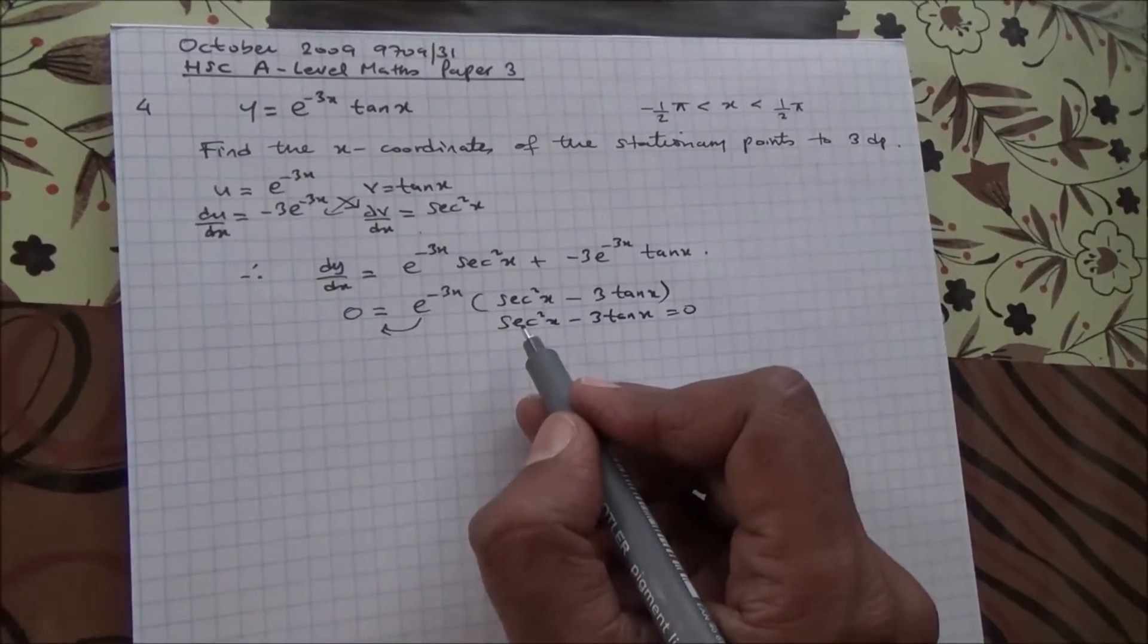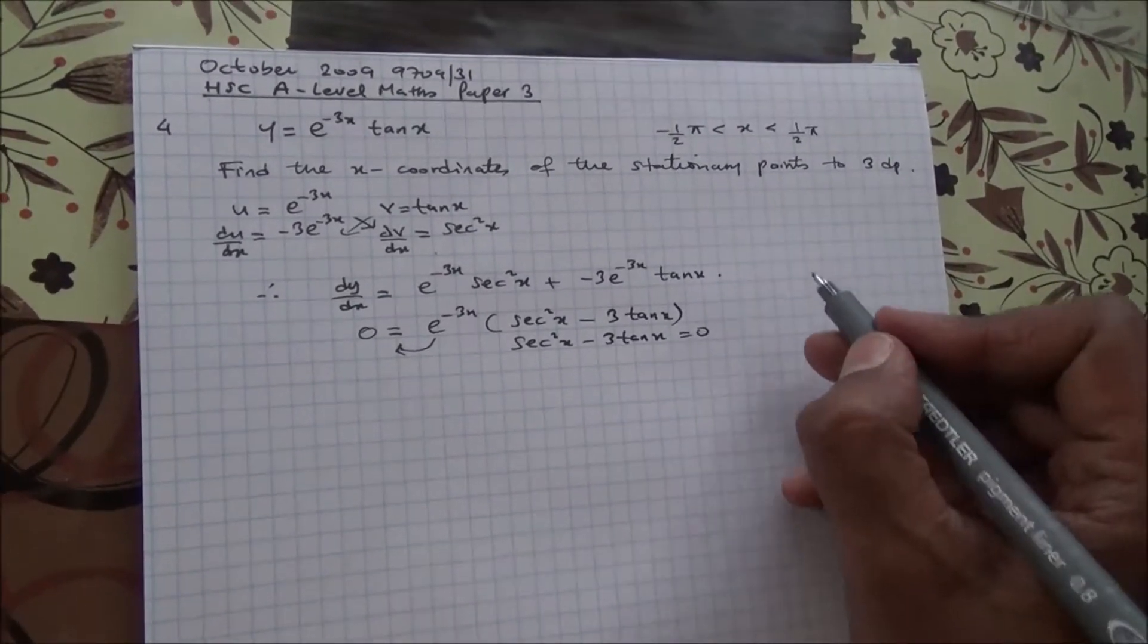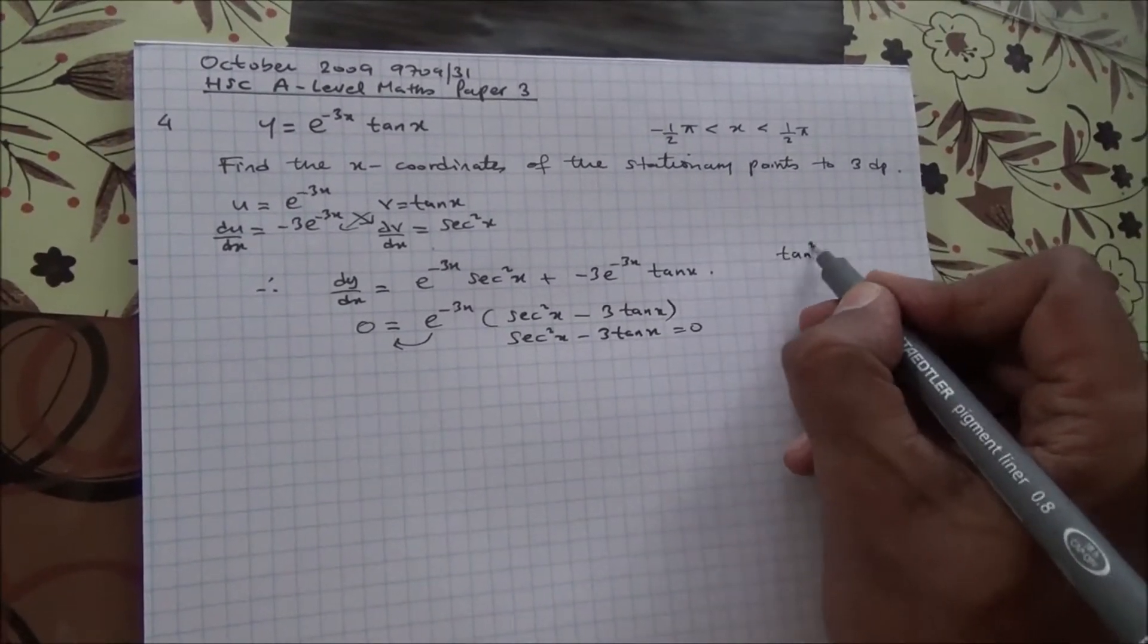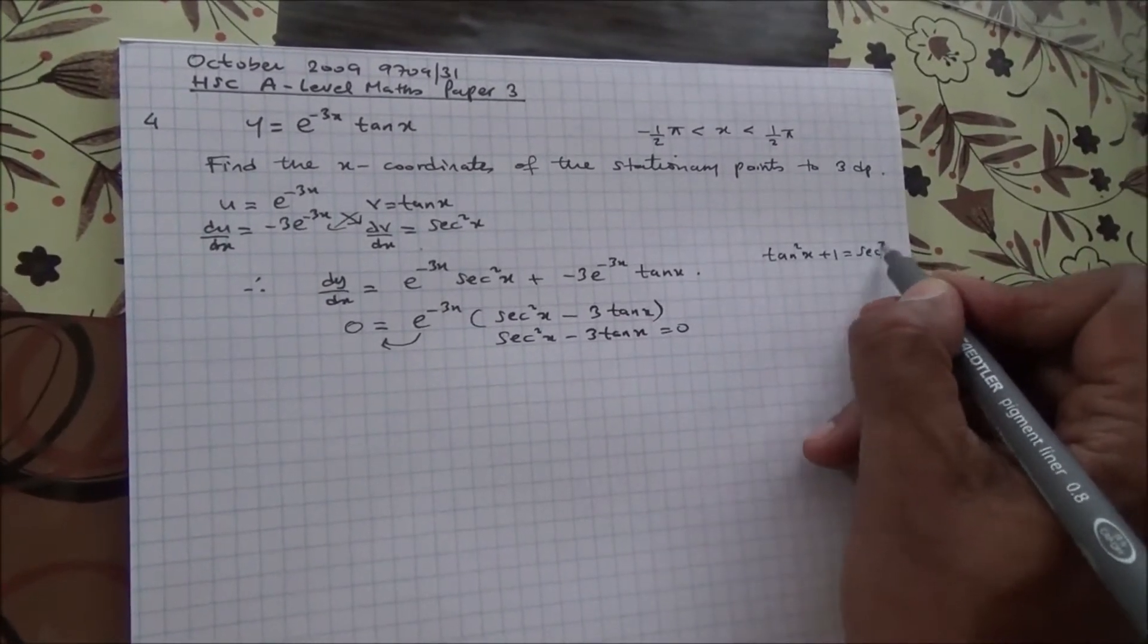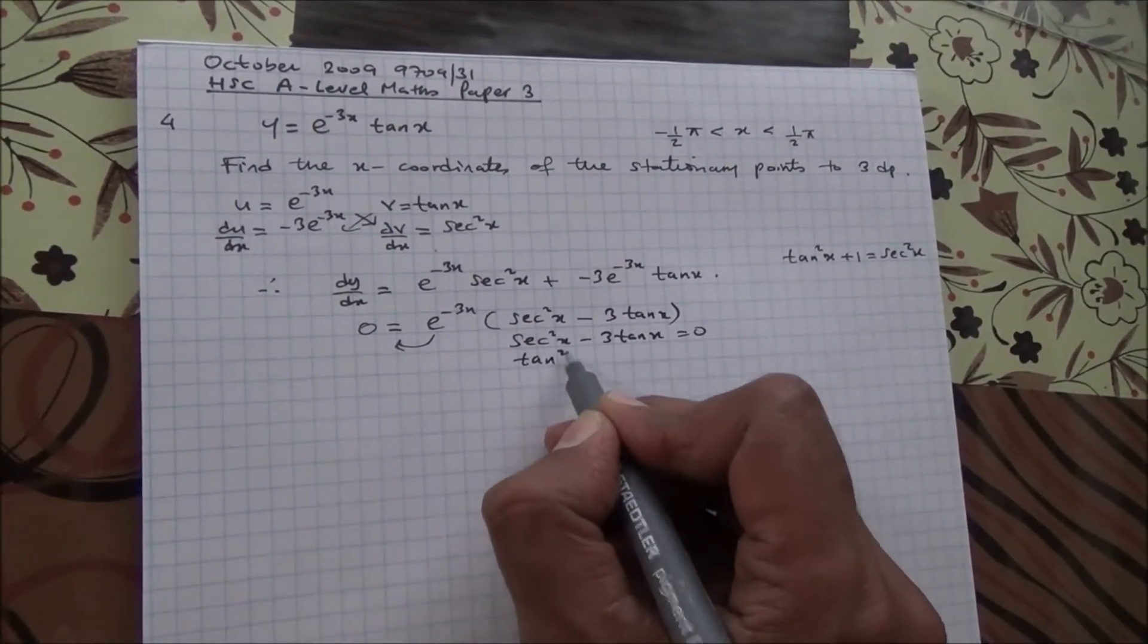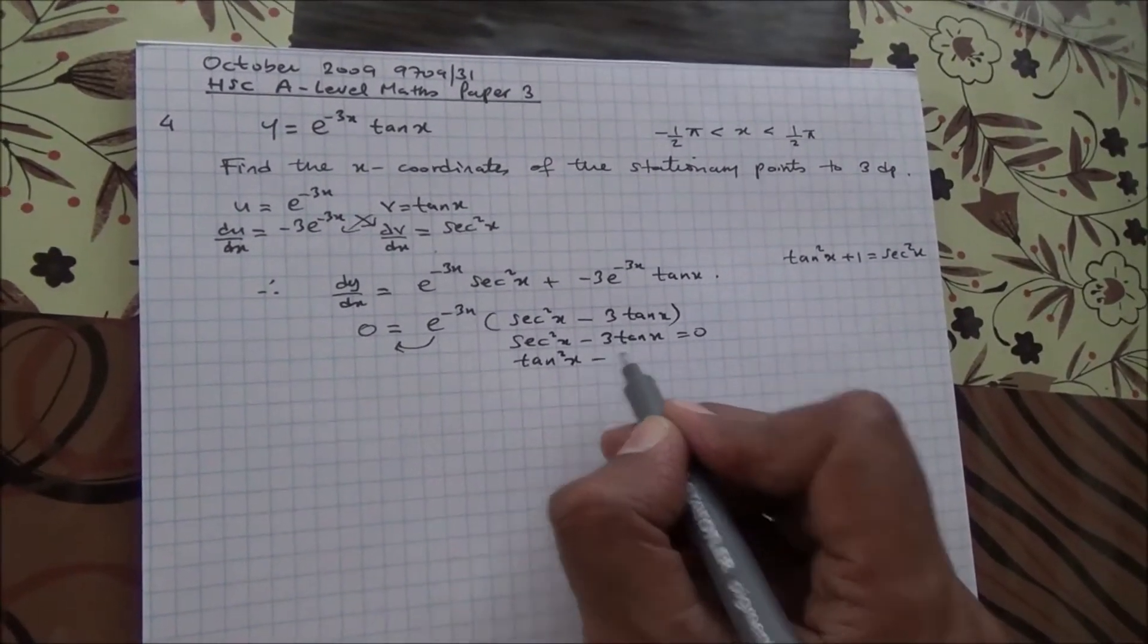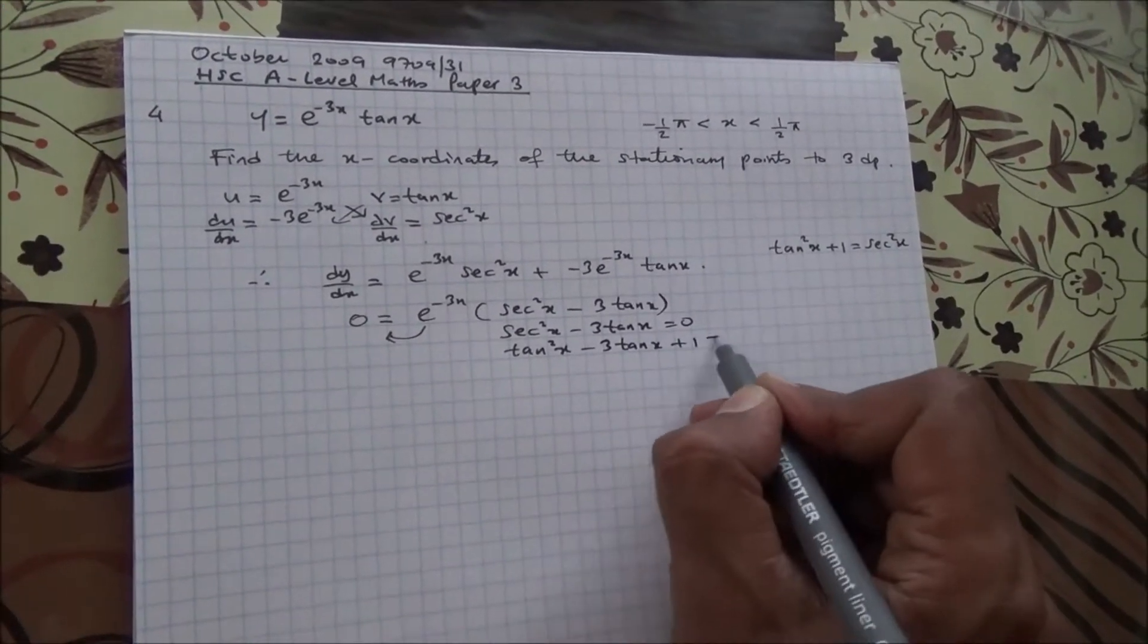What is sec squared x? Now, sec squared x, you should know, is equal to tan squared x plus one. Therefore, we're going to put this as tan squared x minus 3 tan of x plus one is equal to zero.